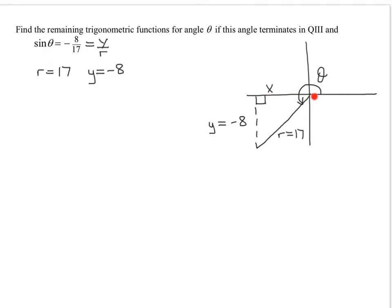And before I even try and find it, is x going to be positive or negative? Since I'm in quadrant 3, we know that x had better be a negative number. So how are we going to find the third side? Given two sides of a right triangle, we always use Pythagoras.